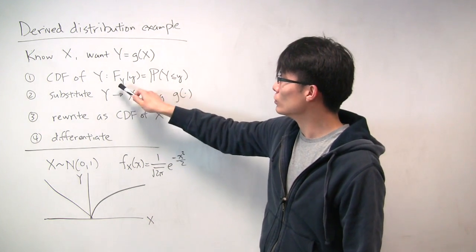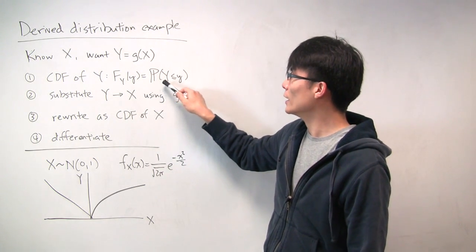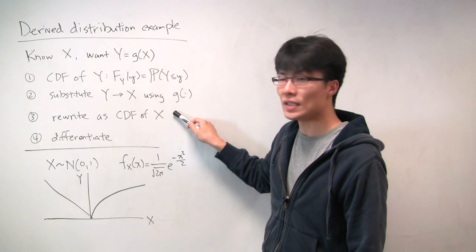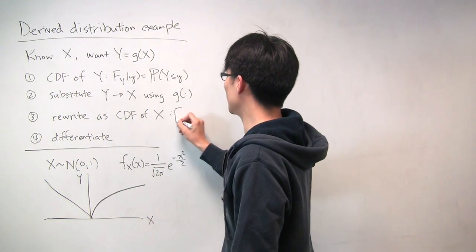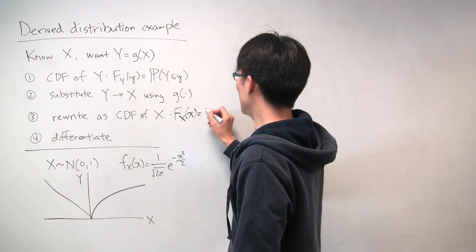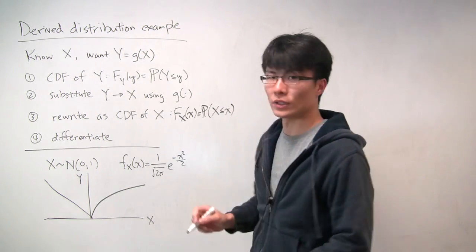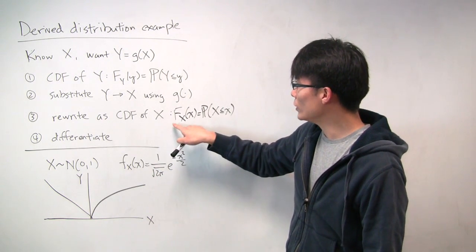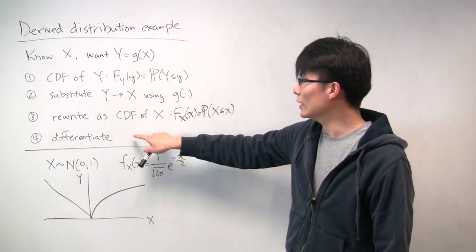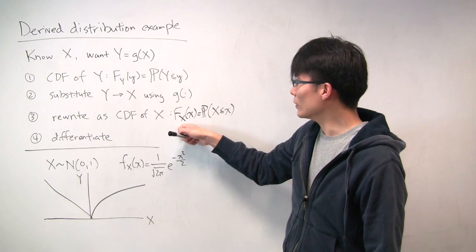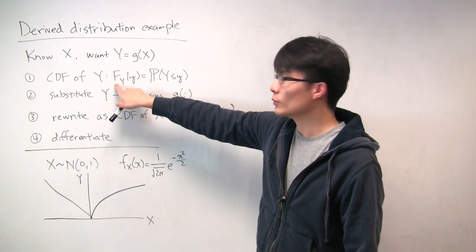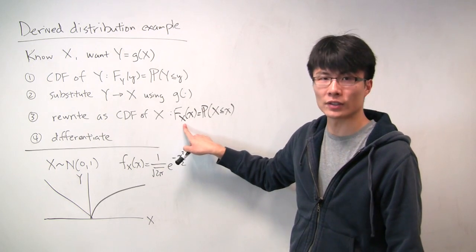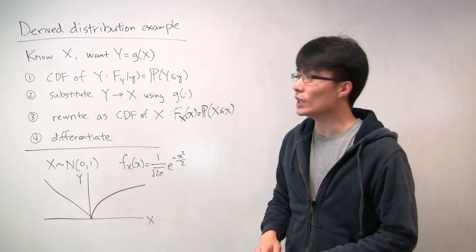So up to this point, the CDF of y becomes the probability that the random variable x is less than or equal to some value little y. Next, we rewrite this probability as a CDF of x — the CDF of x is the probability that x is less than or equal to some little x. Then if we differentiate, differentiating the CDF of x gives the PDF of x, which we presume we already know. And differentiating gives us the PDF of y, establishing the relationship between the two PDFs.